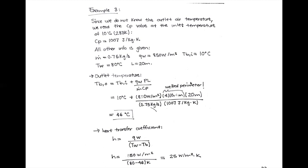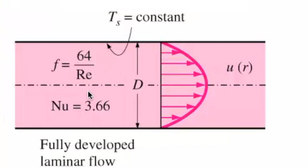The heat transfer coefficient when a surface is exposed to a constant flux is the flux divided by delta-T, where delta-T is the temperature difference between the wall and T-bulk-out. We get an H value of approximately 24–25 W/m²·K. If we also want the heat transfer rate, we use Newton's cooling law: H times the area times delta-T.